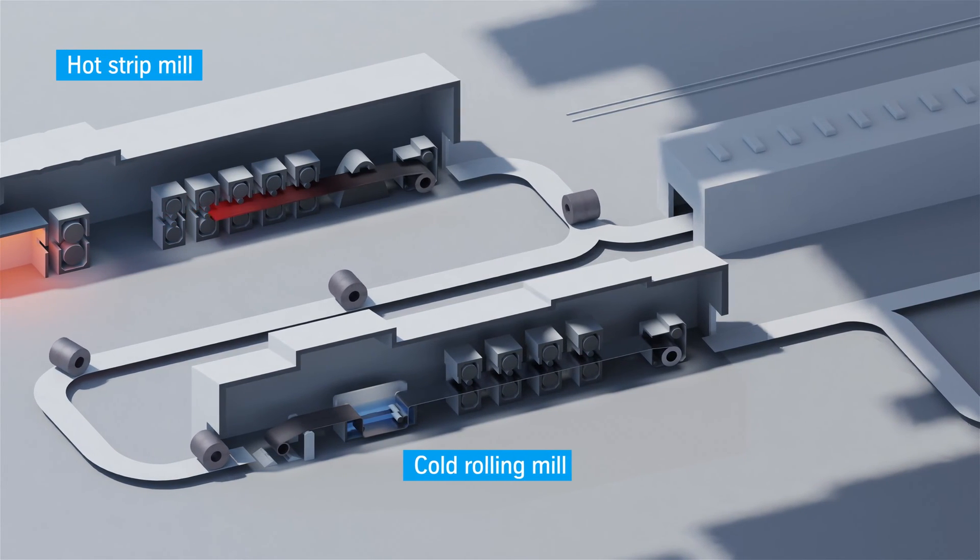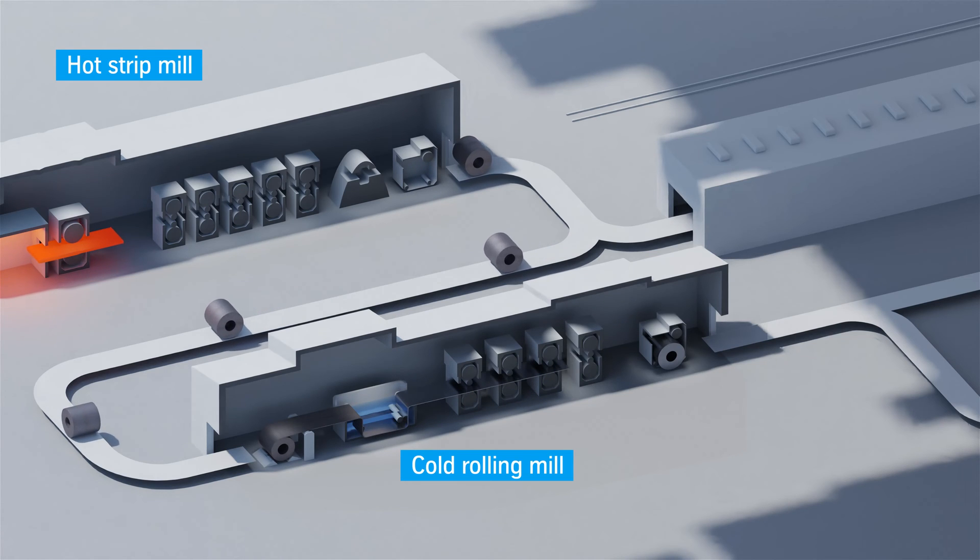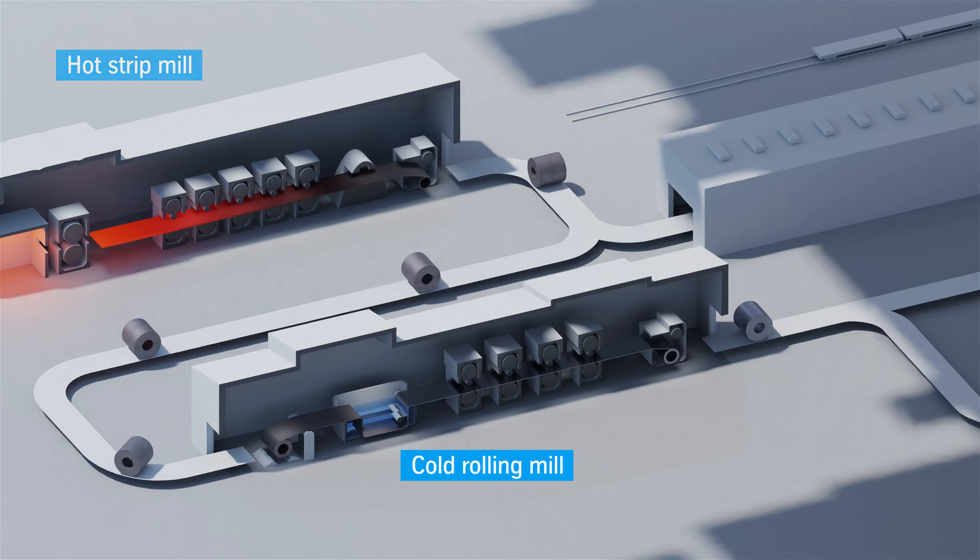In the downstream cold rolling mill, the strip can be rolled down to an even thinner thickness of less than one millimeter.